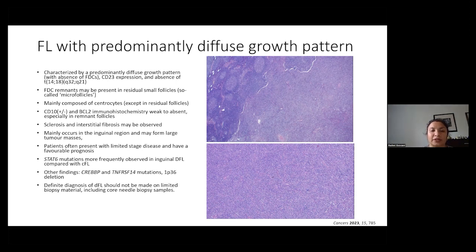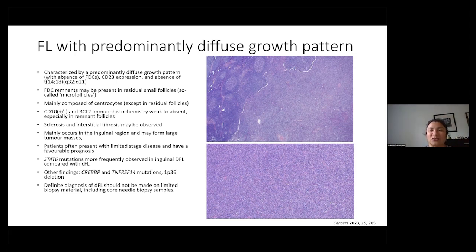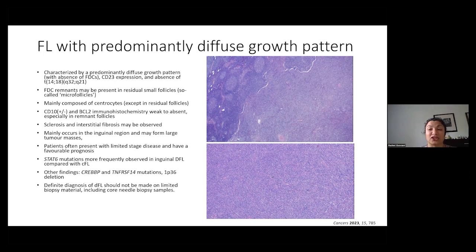Even though it can form large masses, it has a very indolent course and patients usually have limited stage disease. Unfortunately, even if you see a diffuse follicular pattern on a core needle biopsy, it's unclear whether this is just a small component and there's potentially diffuse large B-cell lymphoma elsewhere in the node. So this diagnosis should really not be made on limited biopsy material, and ideally should be made on a lymph node excision.